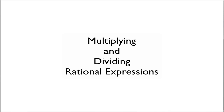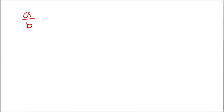In this video we're going to multiply and divide rational expressions. Rational expressions are really just the same thing as fractions. So recall when you're multiplying fractions, if you have a over b times c over d — you just multiply straight across. So you get a times c over b times d.